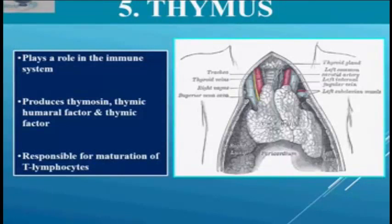These lymphocytes help defend us from various infections, and they protect us from lymphocytes that could potentially attack our own organs, which is known as autoimmune disease.